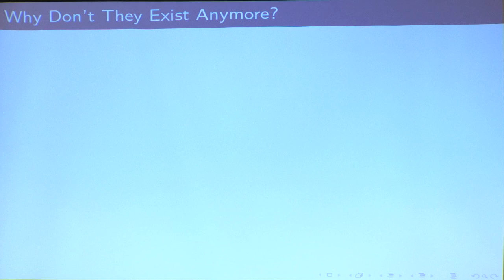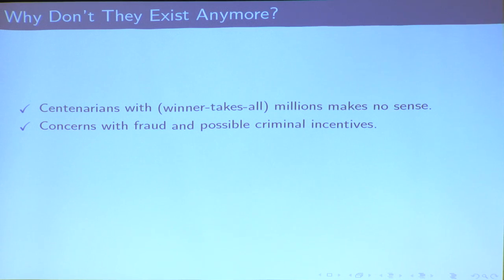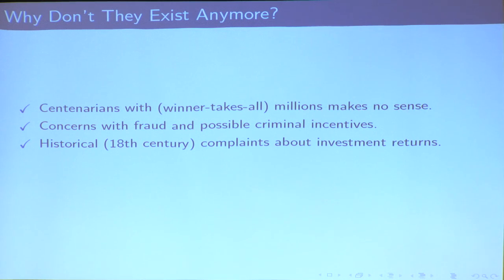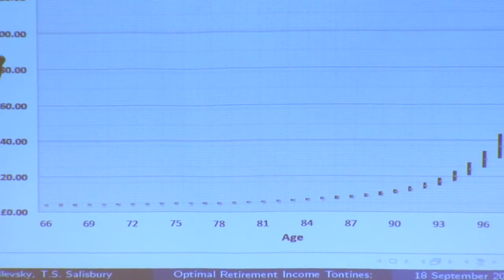Why don't tontines exist anymore? There's a difficulty with the centenarian take-all philosophy — at the very end, somebody gets all the income. But the numerator doesn't have to stay constant. There are concerns with fraud and possible criminal incentives — with four people left, one of them murders the other three. There are novels about that, and a Simpsons episode. There were complaints about investment returns in the 1720s and 30s — investors writing letters asking why their tontine dividends were so low. People were also naming nominees fraudulently. There was a ban on tontine insurance in the U.S. Some people think it's distasteful or unethical.